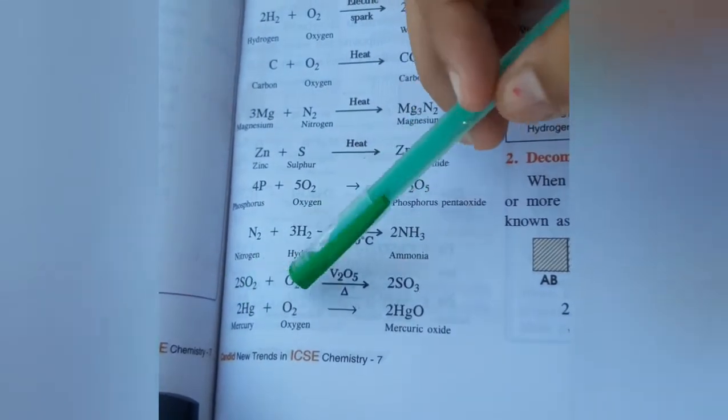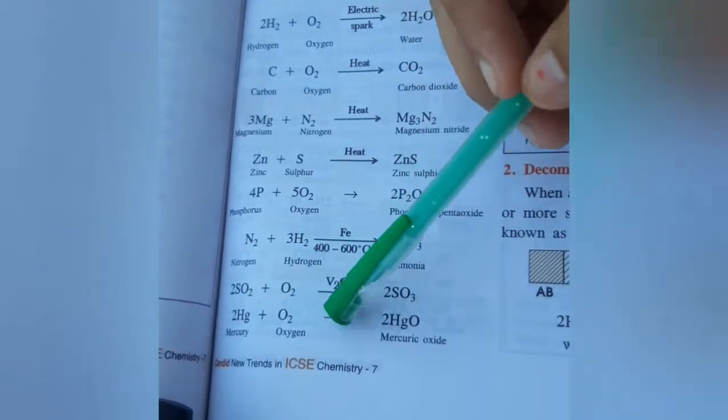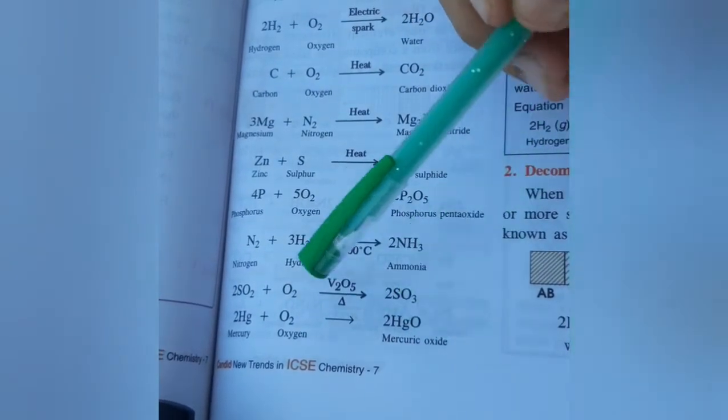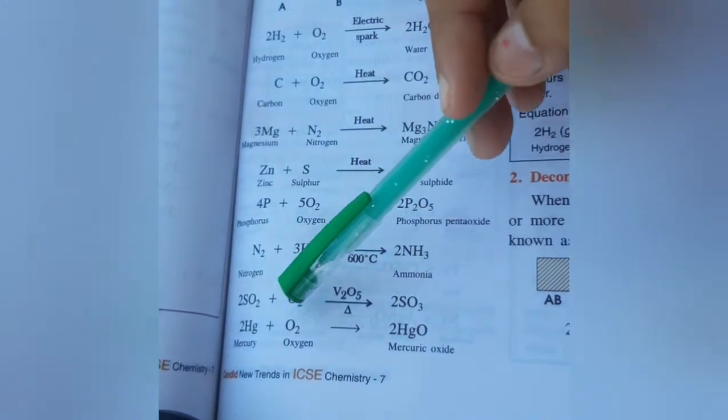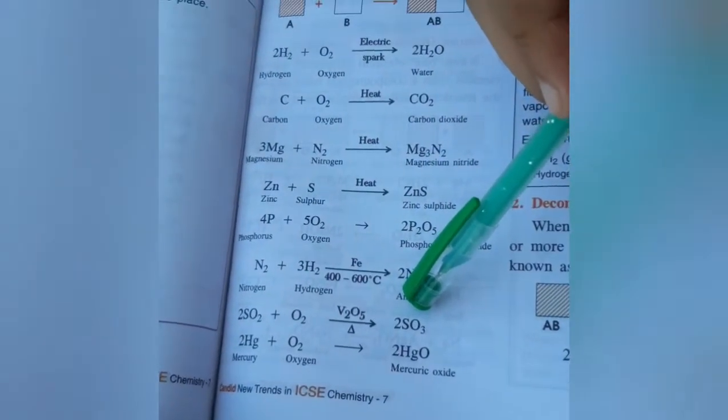2Hg plus O2 equals 2HgO. Mercury plus oxygen on heating equals mercury oxide.